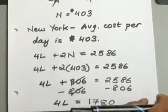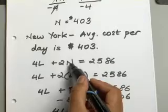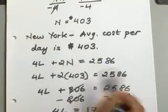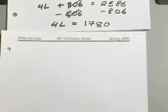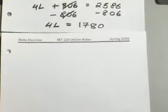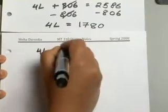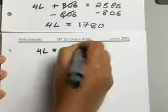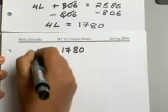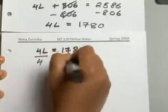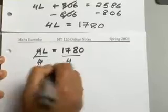You can see what we did here. We just go ahead and substitute our N with the value you found out and go ahead and solve for L. You have 4L equals 1780.